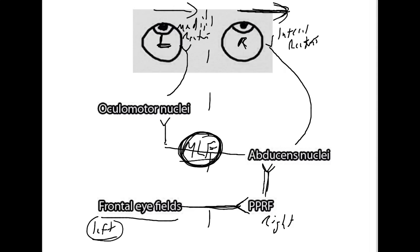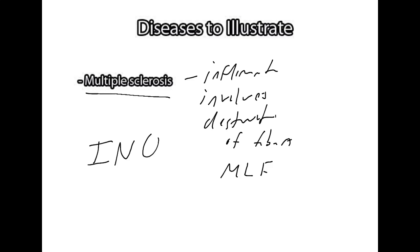The problem is, this information cannot make it to the oculomotor nuclei, so the left eye stays in place. So, you get this weird situation where the right eye, you ask somebody to look to the right, and the right eye will move to the right, but the left eye will stay looking straight ahead. And that is what's known as an INO, or an internuclear ophthalmoplegia, which basically means the eye is paralyzed, or not able to move. And so, that's sometimes a common thing you may see in multiple sclerosis.